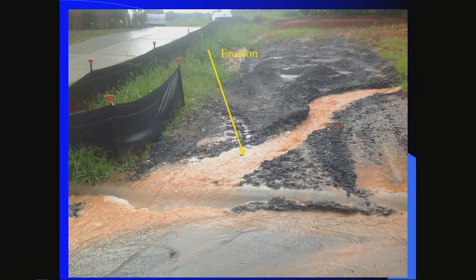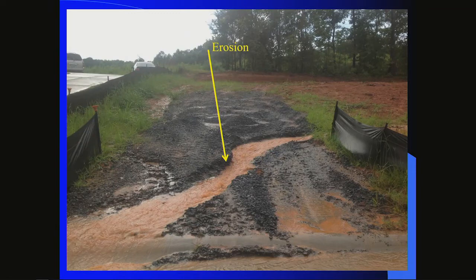In this picture you can see an example of erosion. This storm has dumped a lot of water very fast, and you have erosion cutting across the construction entrance of a single family lot. In the same picture, you can see more erosion as it cuts across the construction lot and starts to deposit sediment out into the road.